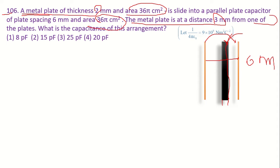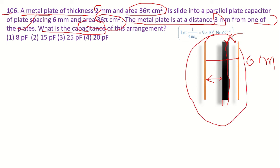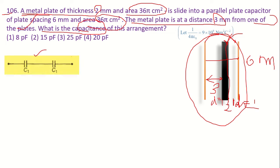The metal plate is at 3 mm distance from one of the plates. We have to find the total capacitance of this arrangement. If this gap is 3 mm and the plate thickness is 2 mm, the remaining gap is 1 mm. So D1 equals 3 mm and D2 equals 1 mm.